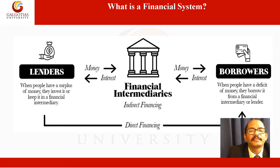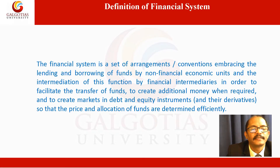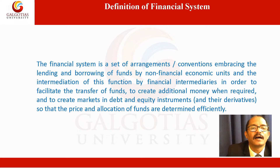The picture on the slide depicts the financial system in its most generic form. People act as lenders when they have surplus money to invest and turn borrowers when they have a deficit. Lenders charge rent on the money called interest, and borrowers pay interest to lenders. The exchange between lenders and borrowers can be direct or indirect; for indirect exchange, services of intermediaries are hired and a service charge is paid. The financial system is defined as a set of arrangements and conventions embracing the lending and borrowing of funds by non-financial economic units, and intermediation of this function by financial intermediaries, in order to facilitate the transfer of funds, create additional money when required, and create markets in debt and equity instruments and their derivatives, so that the price and allocation of funds are determined efficiently.